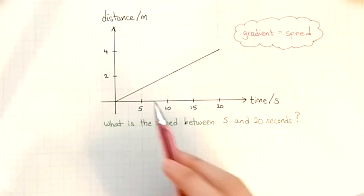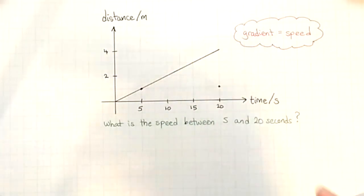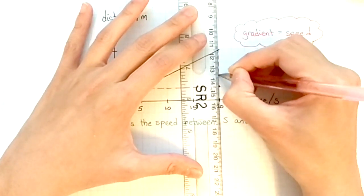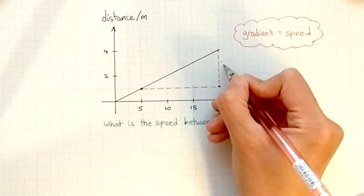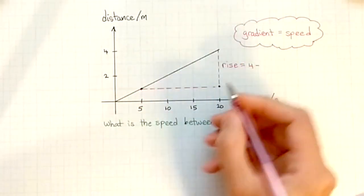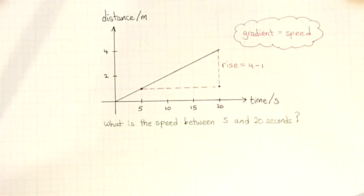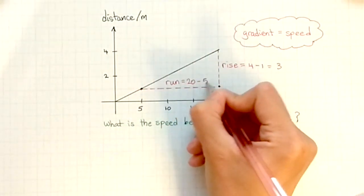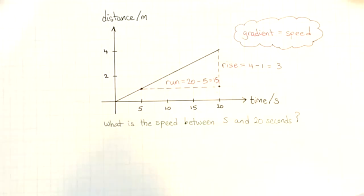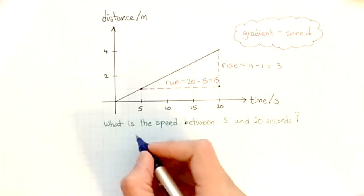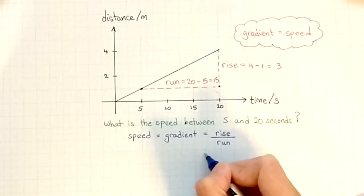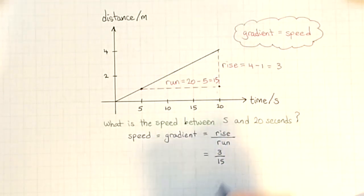On the graph, I'm going to mark out my triangle to obtain my gradient. This is my rise — I take 4 and subtract 1 on my graph, so that gives me a distance of 3 meters. And horizontally, I get 20 minus 5, which gives me 15 seconds. So my speed, which is equal to the gradient, is going to be equal to the rise over run, which is 3 divided by 15.